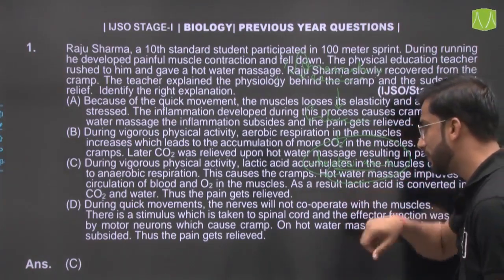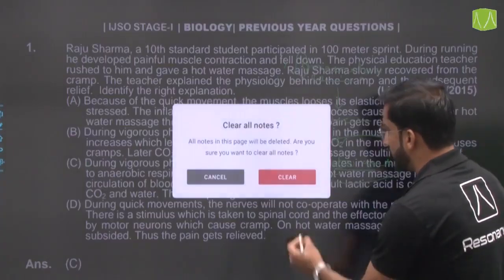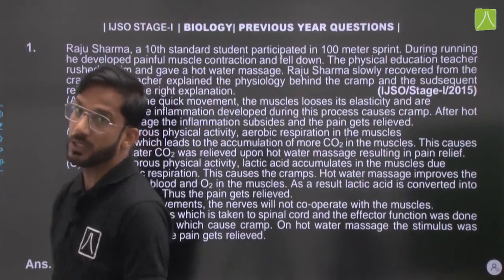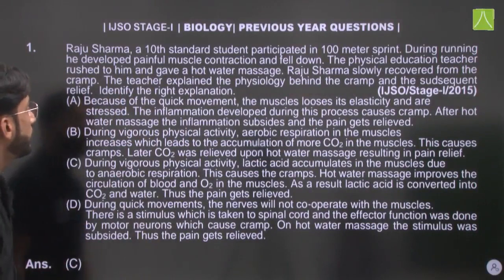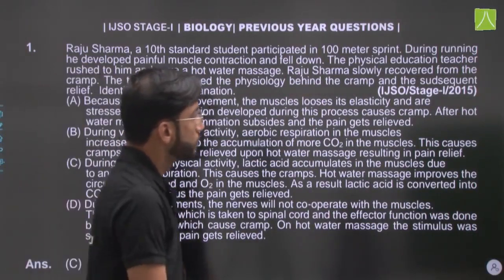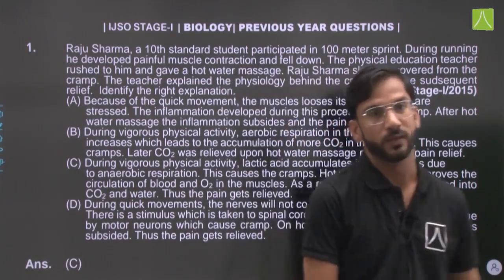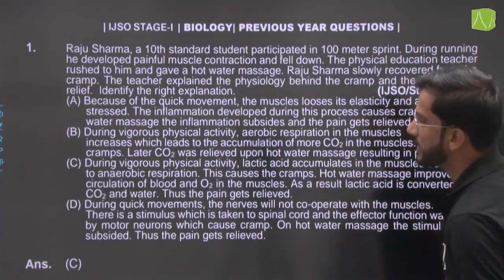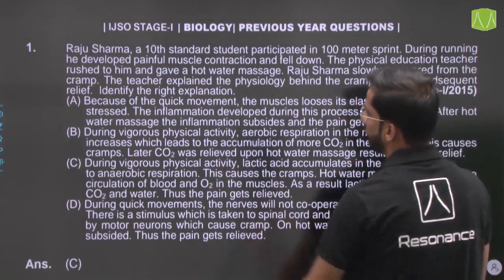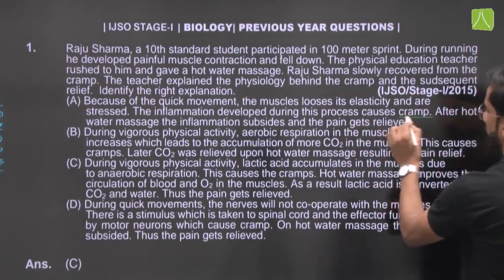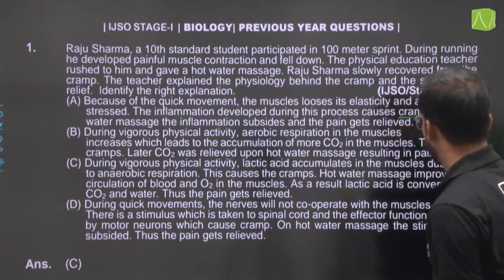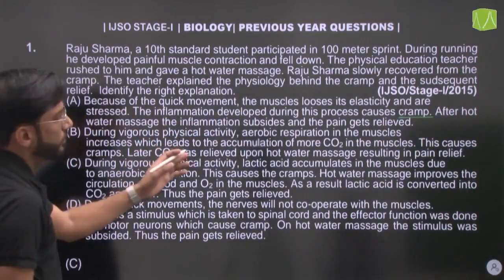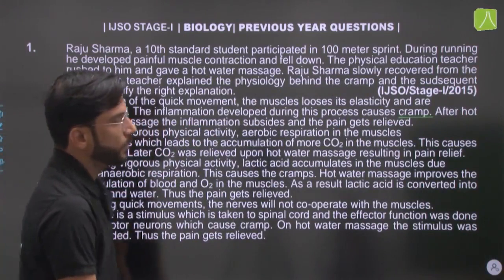Looking at the correct answer: Option A says that because of quick movement, the muscles lose elasticity, stress develops, and inflammation causes cramps. After hot water therapy, inflammation slows down and pain is relieved. This might seem correct initially.